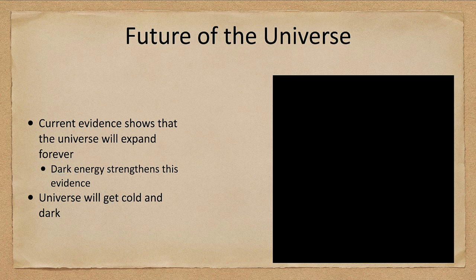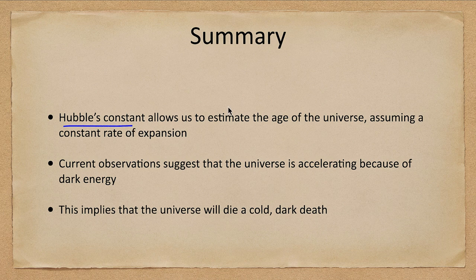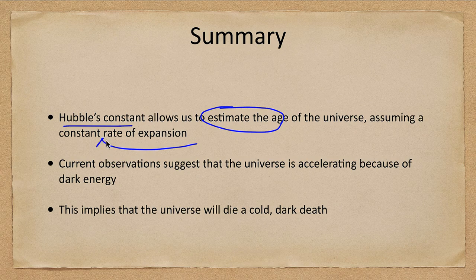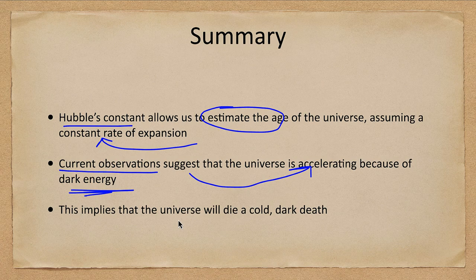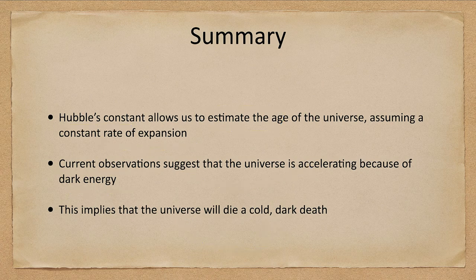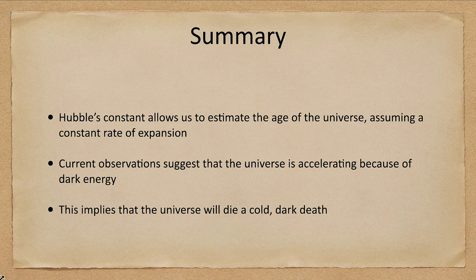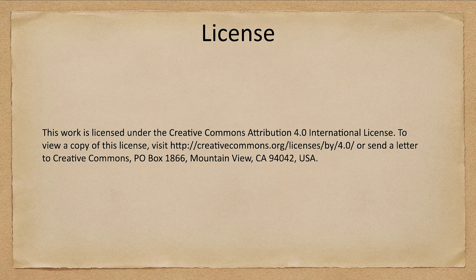So let's go ahead and finish up with our summary. What we've looked at today is that Hubble's constant lets us estimate the age of the universe, and that assumes a constant rate of expansion. Our current observations suggest that the universe is accelerating because of this dark energy, which implies that the universe will die a cold, dark death. So that concludes this lecture on a model of the universe. We'll be back again next time for another topic in astronomy. So until then, have a great day, everyone, and I will see you in class.